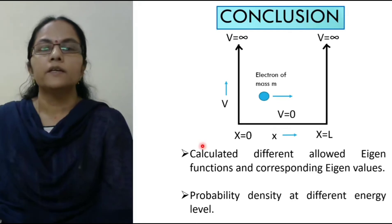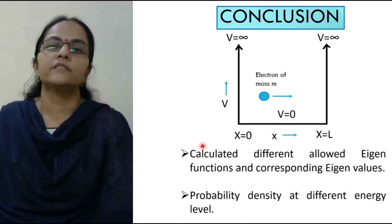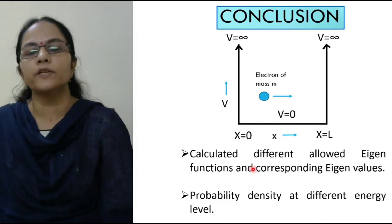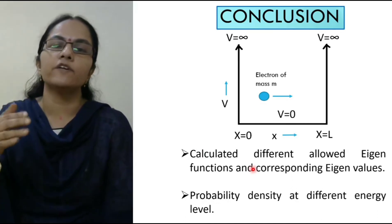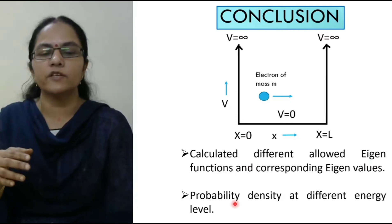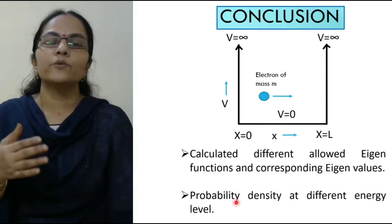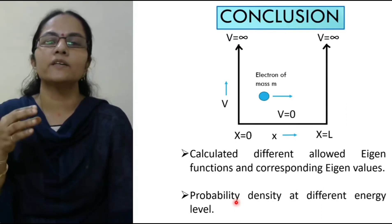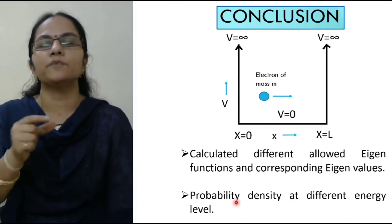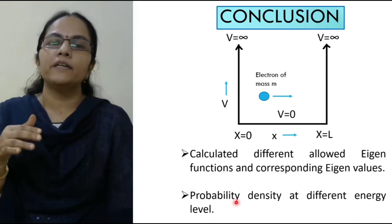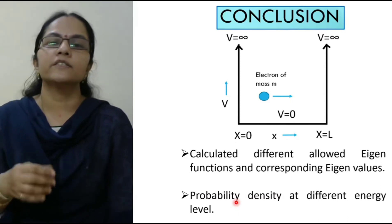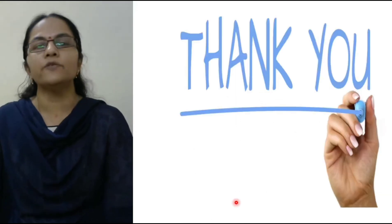To conclude, in these two lectures we have calculated the different allowed eigenfunctions and their corresponding eigenvalues — eigenvalues being the allowed energies and eigenfunctions being the corresponding wave functions. We also calculated the probability density for different energy values. This shows the beauty of the Schrödinger equation, which allows us to calculate allowed energy levels, wave functions, and probability densities. This is the simplest case, but this equation is used in all electronic devices to characterize electrons moving inside them.